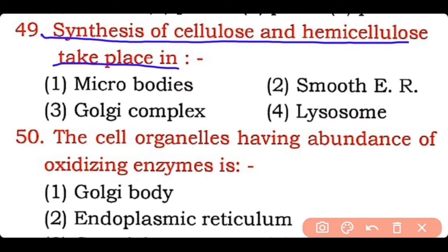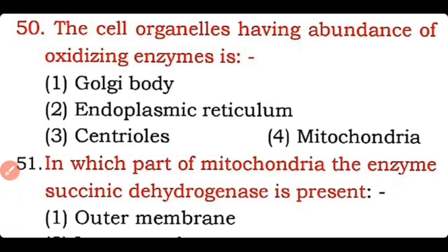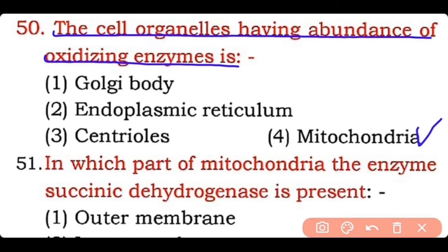Correct answer for Q49 is option three — the synthesis of cellulose and hemicellulose takes place in the Golgi complex, and they form the cell wall. Question 50: The cell organelle having an abundance of oxidizing enzymes is — Golgi body, endoplasmic reticulum, centriole, or mitochondria? Correct answer is option four — mitochondria have an abundance of oxidizing enzymes.